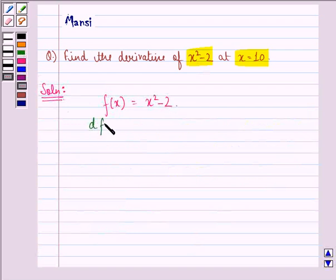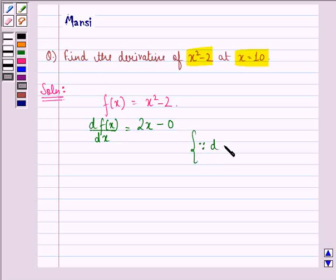We have to find derivative of f(x) with respect to x that will be equal to 2x minus 0. This happens because derivative of x square with respect to x is 2x, since derivative of x raised to power n is n·x raised to power n minus 1. Here n is 2 so 2 minus 1 is 1 which is same as 2x. Derivative of constant is 0 so we have 0 here. So derivative of f(x) with respect to x is equal to 2x.